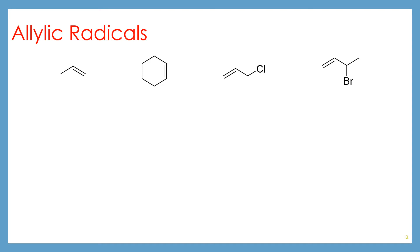The allylic position is one carbon removed from an alkene. So for example, there, there, there — this is an allylic alkyl halide, and so is this.